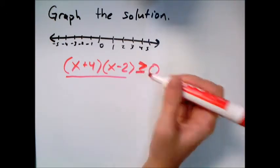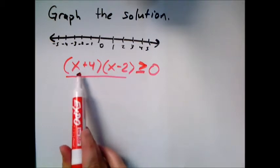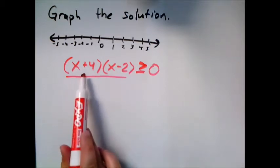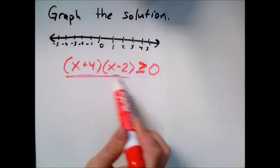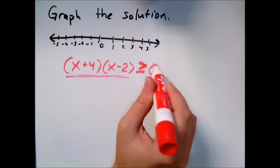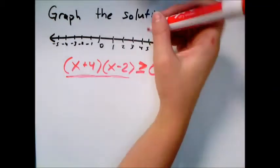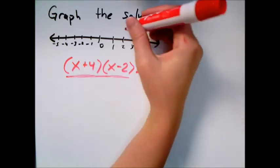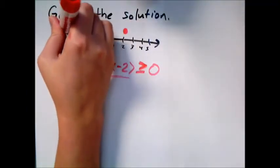One method — we'll do this first and then I'll show you something possibly quicker — is to think about where this expression equals zero. It's already factored, so it's easy to see it equals zero at negative four and at two, when each factor is zero. Since we want greater than or equal to zero, we use filled-in circles at two and negative four, so those points are part of our solution.